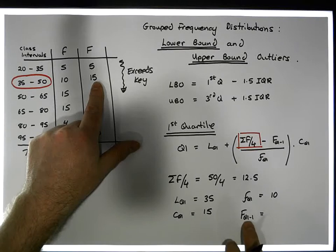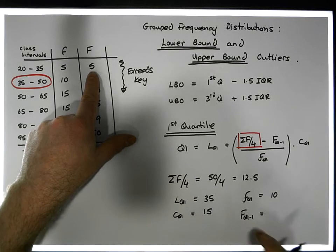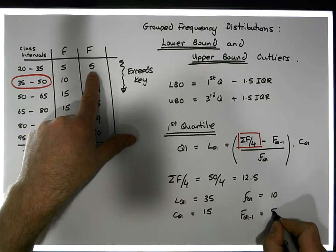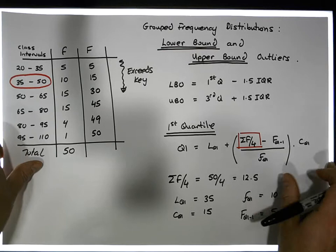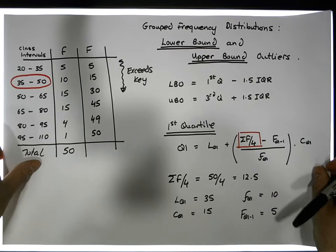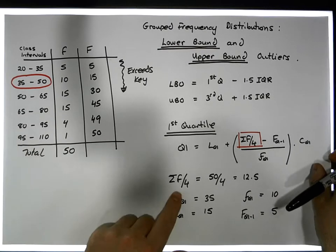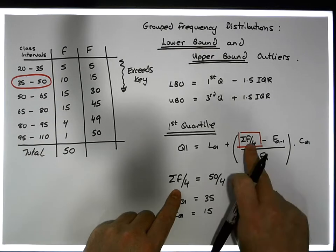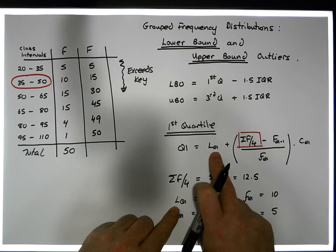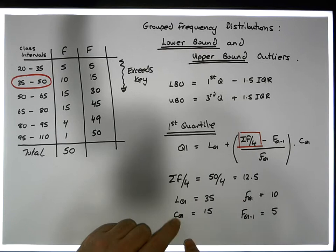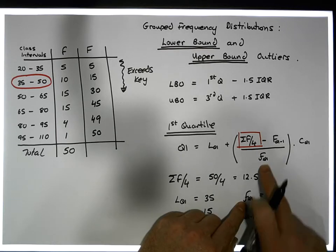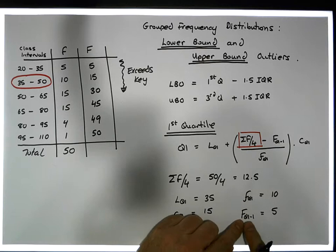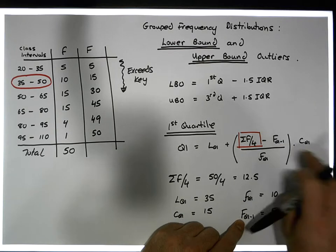The cumulative frequency of the class before the quartile class gives us 5. In our calculation here, we have all of our values: sigma f over 4, L of Q1 (the lower bound of the quartile class), the width of the quartile class, the actual frequency of the quartile class, and the cumulative frequency of the class before the quartile class.